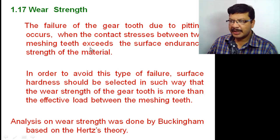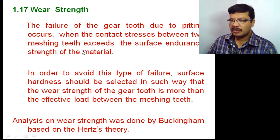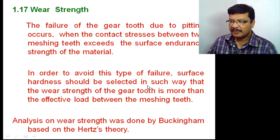In this video tutorial I'll explain about wear strength of the gear teeth. Wear strength of the gear teeth means it is the amount of tangential force that the gear teeth can transmit without pitting. Failure of the gear teeth due to pitting occurs when the contact stress between the two meshing teeth exceeds the surface endurance strength of the material. To avoid this type of failure, surface hardness should be selected such that the wear strength of the gear teeth is more than the effective load. This analysis on wear strength was done by Buckingham — that's why this is also called Buckingham's equation for wear strength.